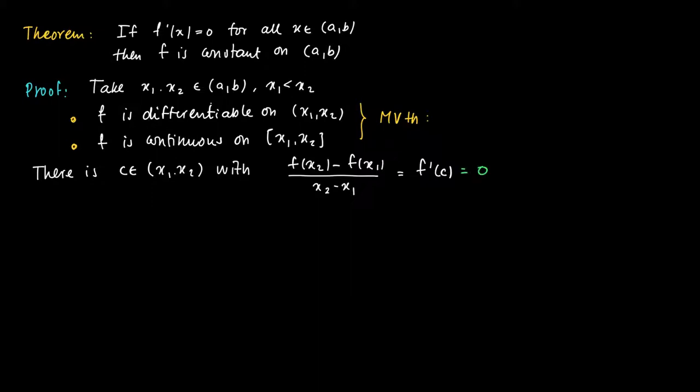But the derivative at c, since c is chosen in the interval (x1, x2), must be zero. But then the fraction f(x2) minus f(x1) divided by x2 minus x1 should be zero. And since x2 minus x1 is unequal to zero, it must follow that f(x2) minus f(x1) equals zero, or f(x2) equals f(x1).